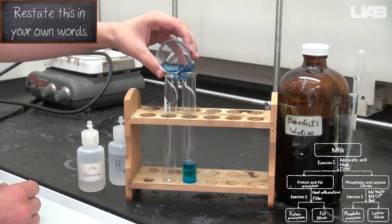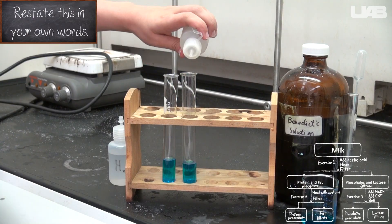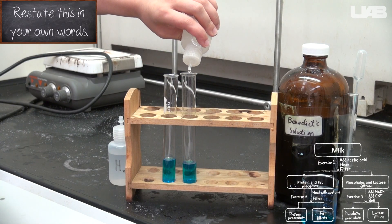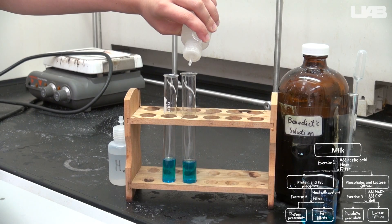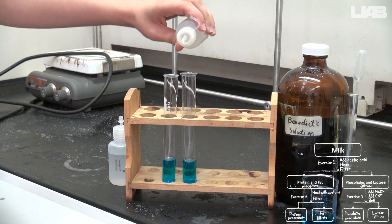One of the test tubes will act as a positive control. We will add 8 drops of a prepared 1% glucose solution to this tube. This tube will give a positive result that you can reference. Add 8 drops of your filtrate to the other test tube.